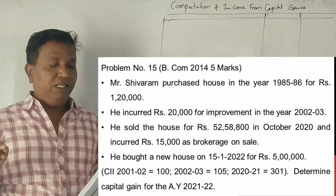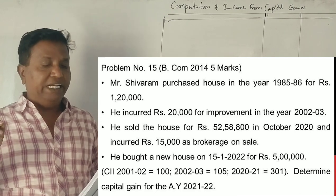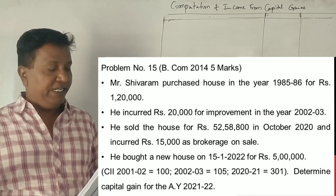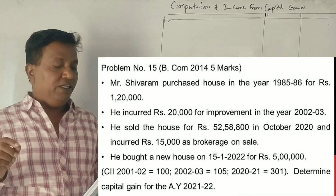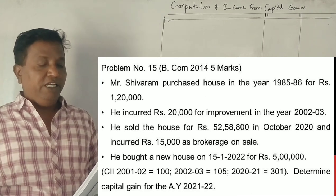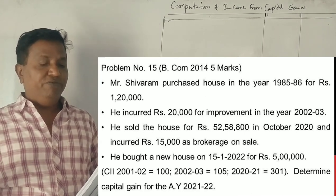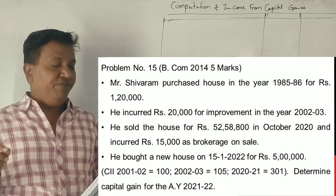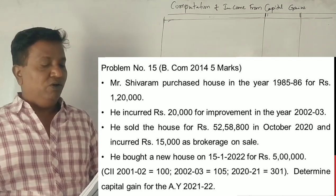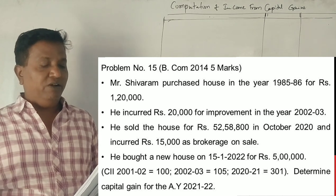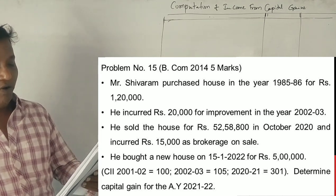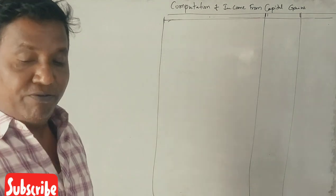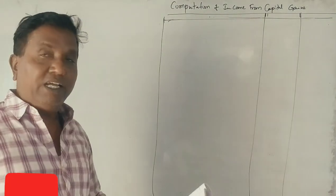He sold the house for Rs. 52,58,800 in October 2020 and incurred Rs. 15,000 brokerage on sale. He bought a new residential house on 15th of January 2022 for Rs. 5,00,000. CII for 2001-02 is 100, 2002-03 is 105, 2020-21 is 301. Determine capital gain for the assessment year 2021-22.